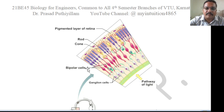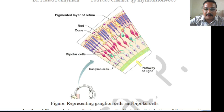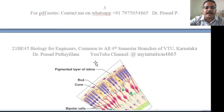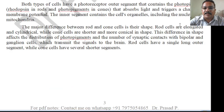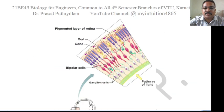The difference in shape affects the distribution of photopigments and the number of synaptic contacts with bipolar and ganglion cells. Rod and cone cells connect to bipolar cells and then to ganglion cells along the light pathway. You can see light comes in, hits the ganglion cells, then bipolar cells, and then rod and cone cells receive that. Rod cells have a single long outer segment while cone cells have several shorter segments, as visible in the diagram.